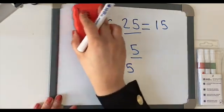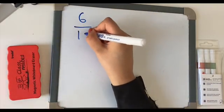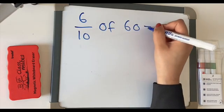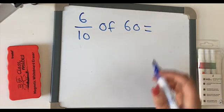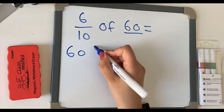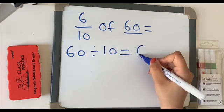Let's have a look at another example. If I did six-tenths of 60, the same rule applies. We get our whole number, which is 60. Divide that by 10.